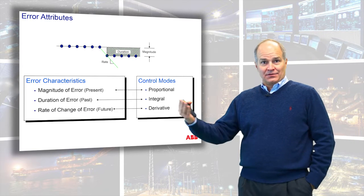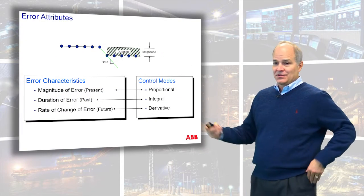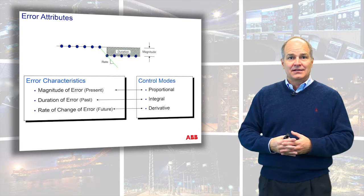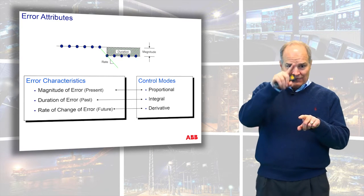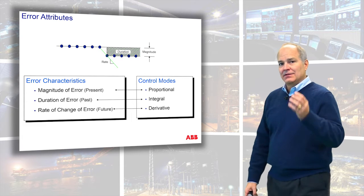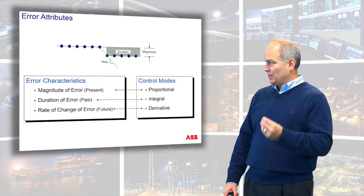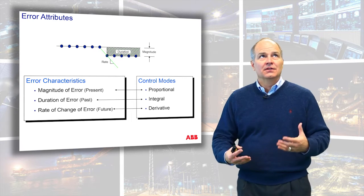If you notice, there's proportional, integral, and derivative — three parameters in a controller. What do those line up with? Proportional control is designed to work with the magnitude of the error. Integral control is designed to deal with the past error or the area under the curve. And the derivative is designed to deal with the future error or the rate of change. So in mathematical terms, proportional is like a teeter-totter. Integral is looking at the area under the curve and translating that into an output. And derivative is looking at how fast this change occurs and trying to adjust the output based upon that.